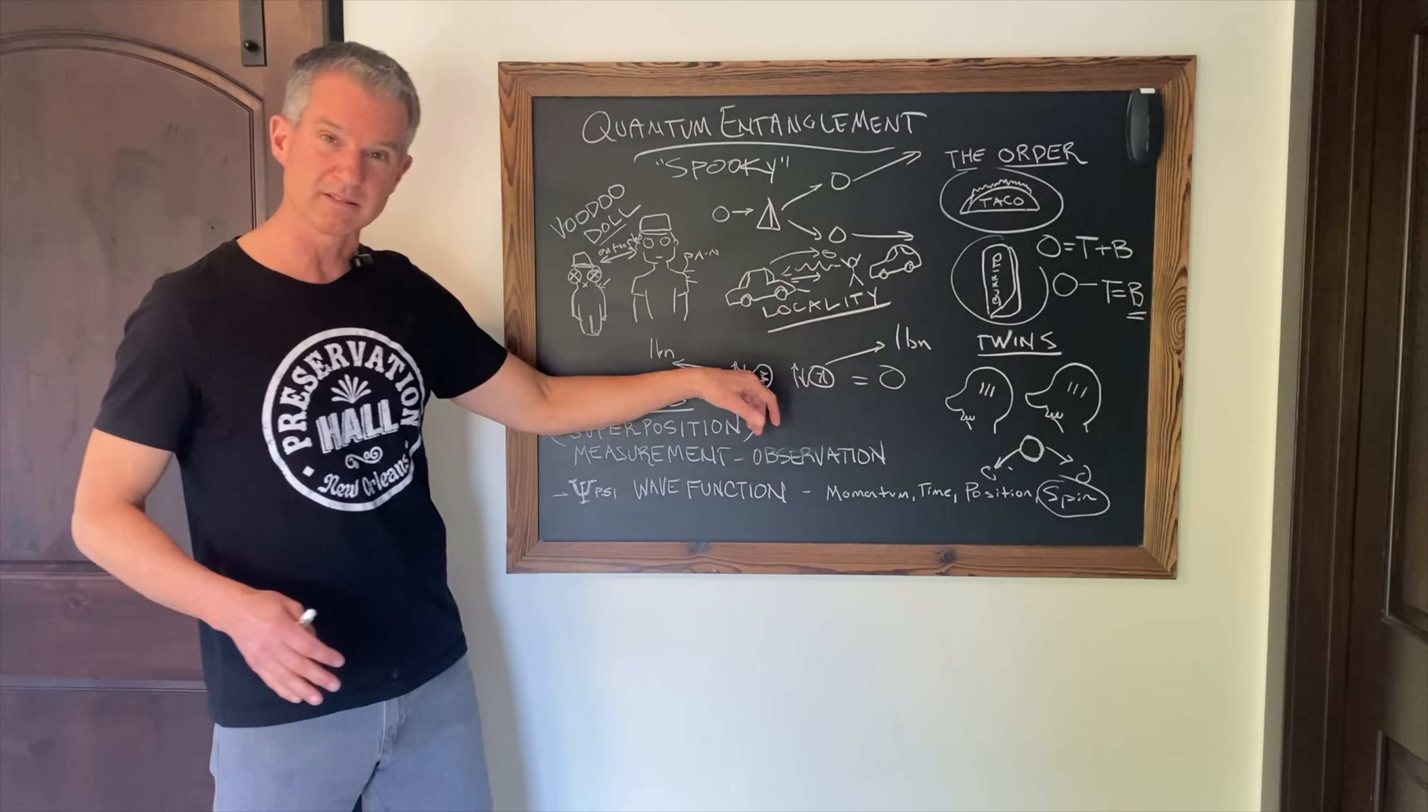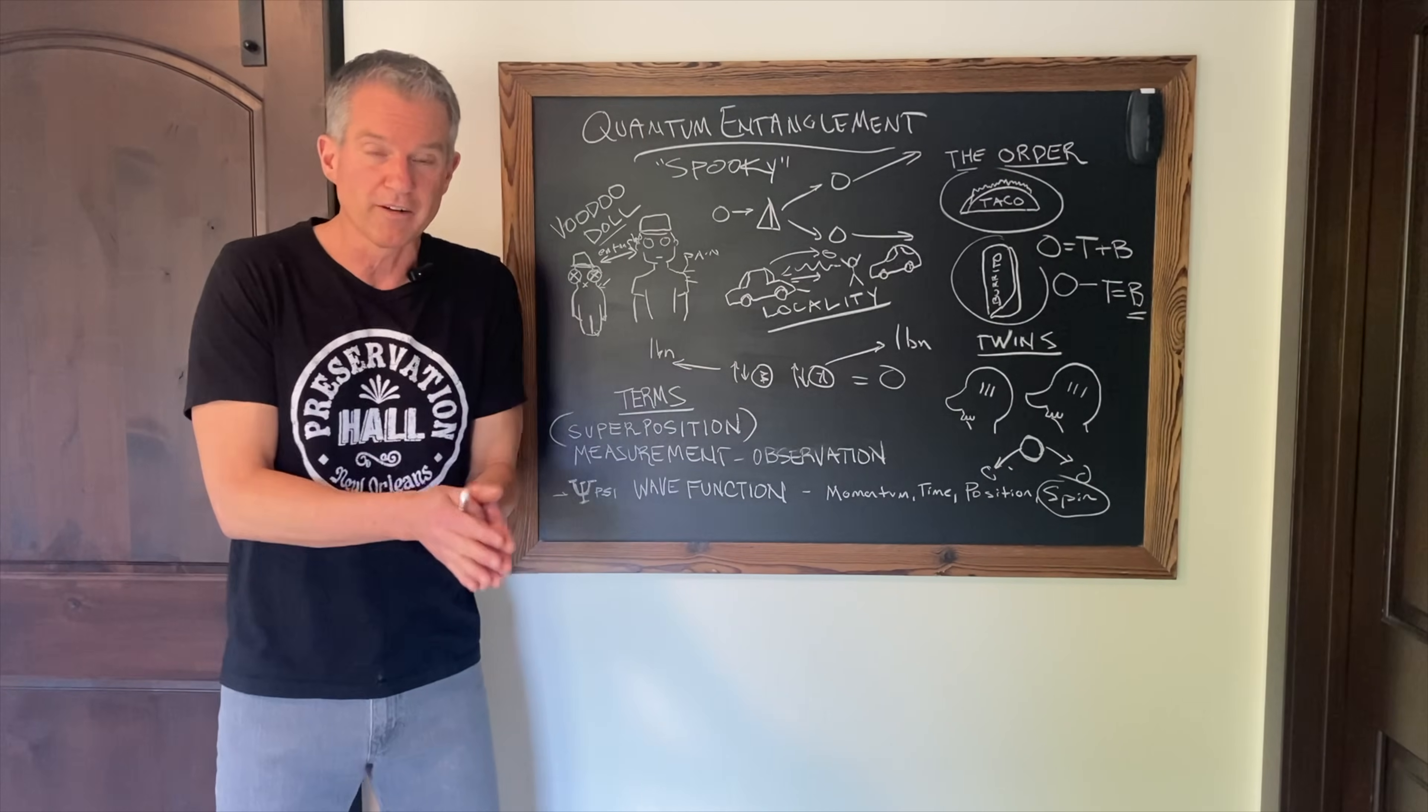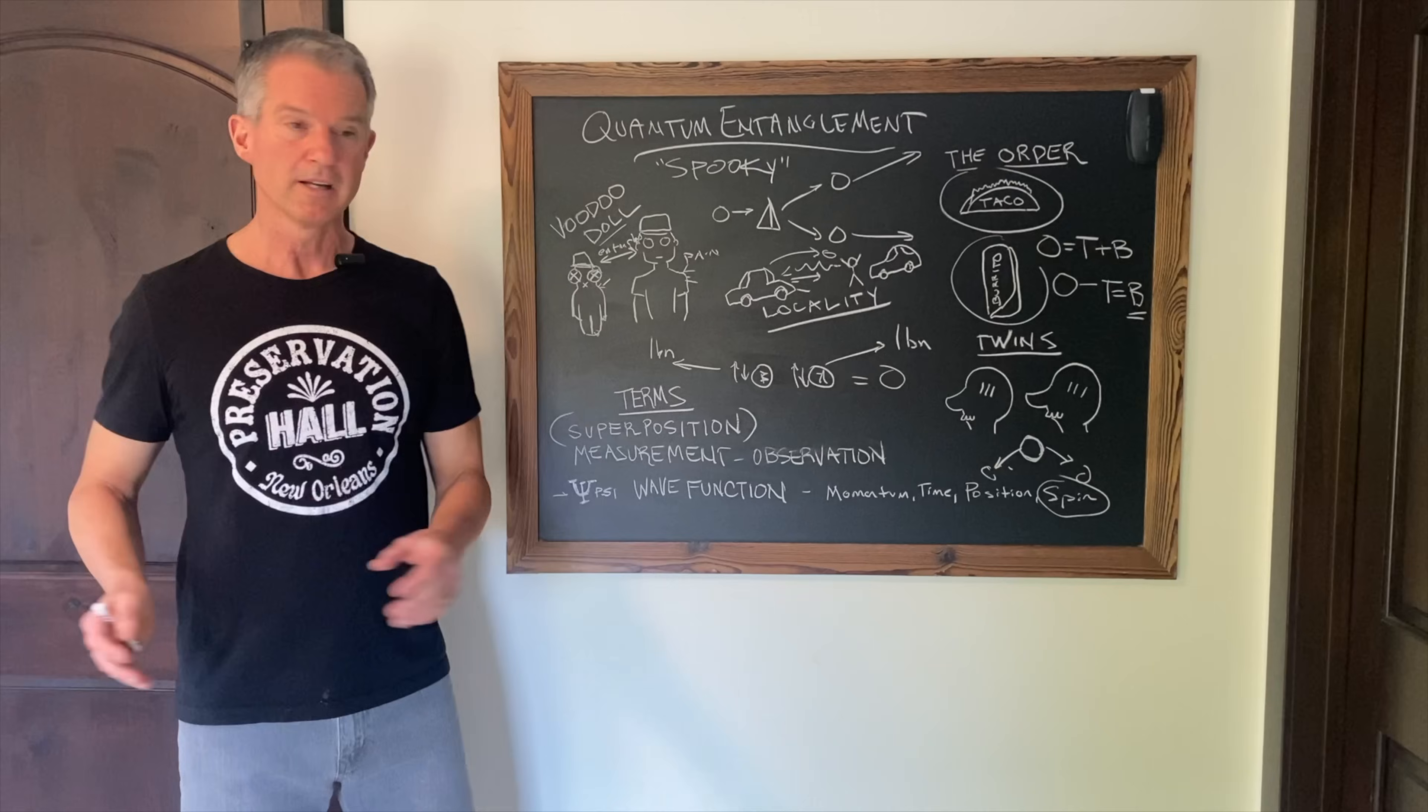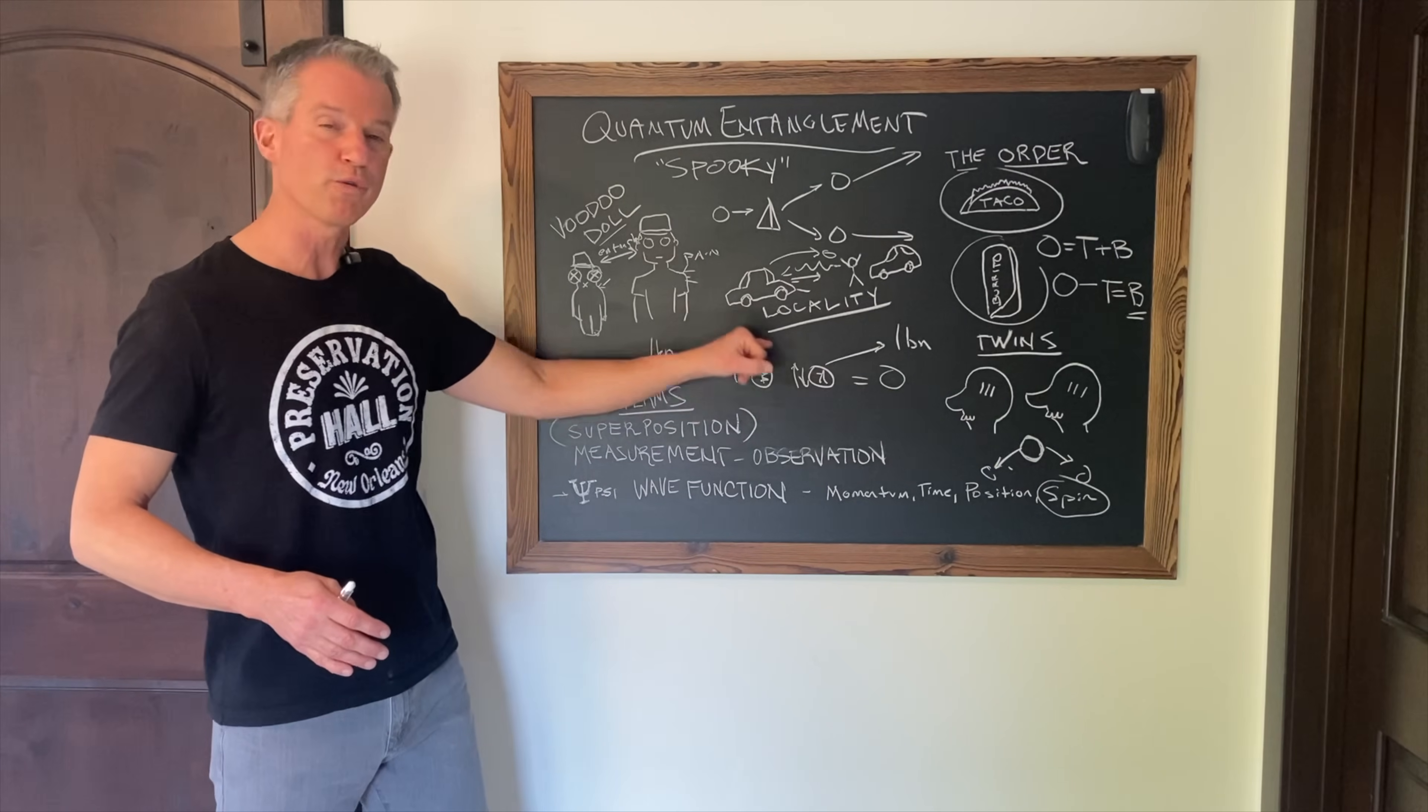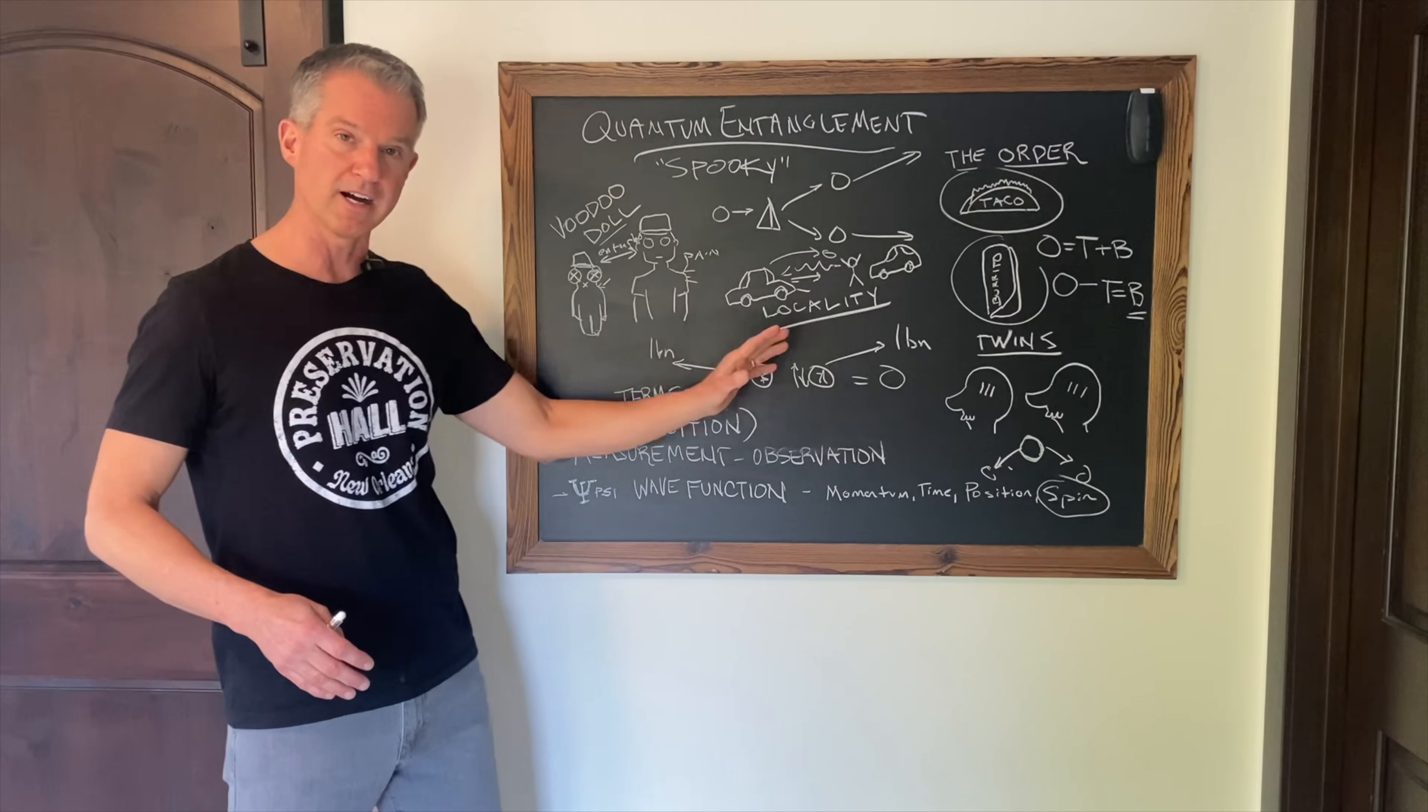As soon as their spin is measured, the interaction of the measurement with the particle collapses the wave function. It's no longer in a state of both up and down. It becomes either up or down.